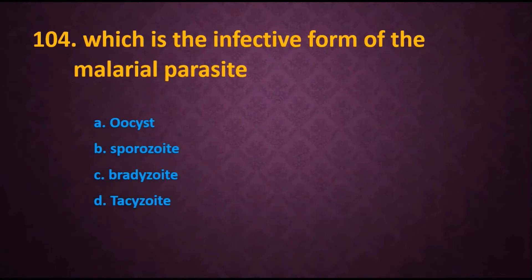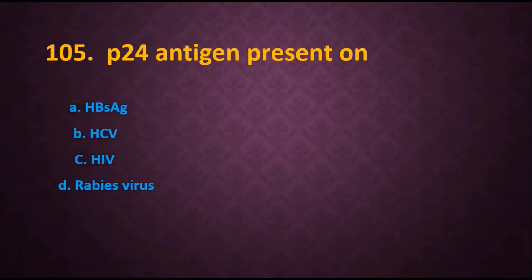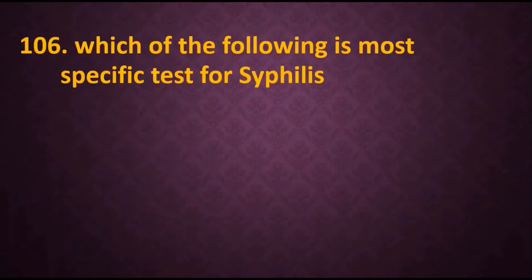The answer is B, sporozoite. Question 105: P24 antigen is present on — options are: A) HBs antigen, B) HCV (Hepatitis C virus), C) HIV, D) Rabies virus. Obviously P24 antigen is present on HIV, that is Human Immunodeficiency Virus.